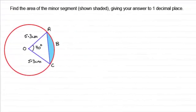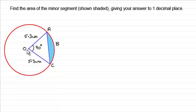Hi there. In this tutorial I want to show you how we go about finding the area of a segment, as I've shaded here. I've got a circle with radius 5.3 centimeters, and the angle subtended at the center from the chord AC is 70 degrees.